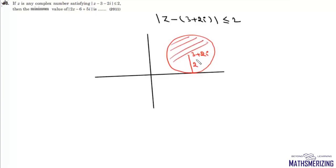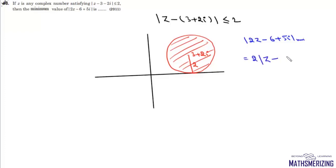We are talking about all the points on or inside this circle. Now we need to find minimum value of mod(2Z - 6 + 5i). We take 2 out and write it as 2 times mod of Z minus (3 - 5/2 i). Any modulus is nothing but the distance between two points. So here we are talking about distance between Z and the point 3 - 5/2 i.